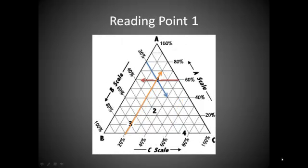Here we are going to read point 1, and point 1 is the intersection point of all three of the arrows. Point 1 would be read as such: 60% A, 20% B, and 20% C.